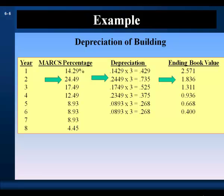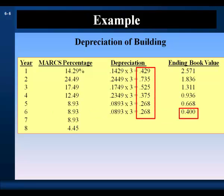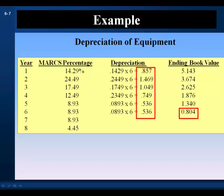For year two, the depreciation percentage from the schedule is 24.49%. The depreciation expense is 0.2449 multiplied by the initial cost of $3 million, giving $735,000. The book value at the end of year two is $2.571 million minus $735,000, or $1.836 million. We work down to year six, getting a full schedule of depreciation expense for each year and the ending book value at the end of year six. We do the same calculation for the equipment.